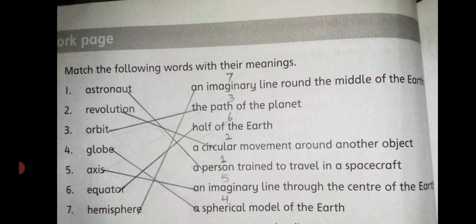The third word is Orbit. You have to match it with the meaning: the path of the planet. Orbit — the path of the planet. I have written number 2 on this, so you have to match orbit with that meaning.